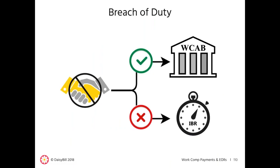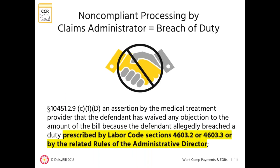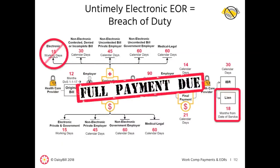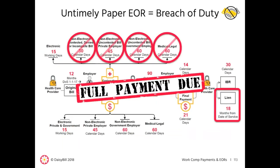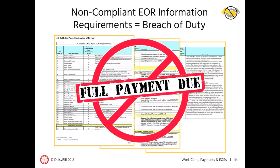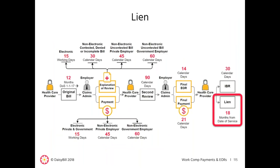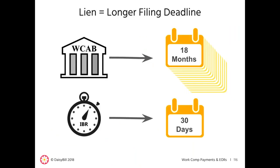Before we move on to timely payment requirements, I want to go over breach of duty and why it is advantageous for providers in the appeals process. A lien and full payment of the bill is the explicit resource the DWC allows when a claims administrator fails to adhere to the labor codes. An untimely electronic or paper EOR is a breach of duty, and failing to include all required EOR information is also a breach of duty. Filing a lien is far easier than submitting an IBR: a lien can be filed within 18 months of the last date of service, which is much more generous than the IBR's 30-day window from the final EOR.